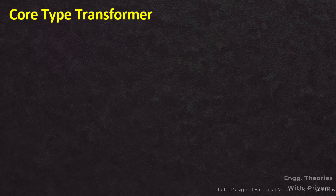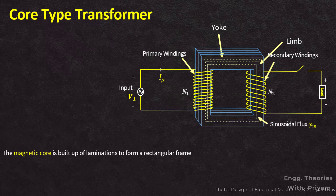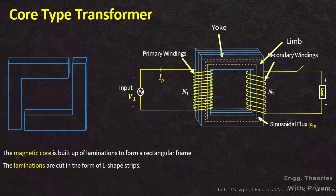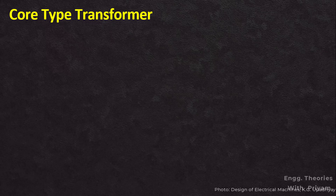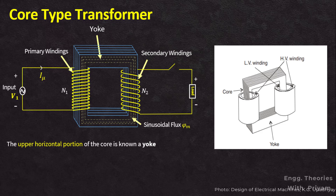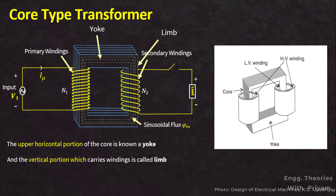In such transformers, the magnetic core is built of laminations to form a rectangular frame. The laminations are cut in the form of L-shaped strips. To eliminate the high reluctance at continuous joints, the laminations are placed alternately. The upper horizontal portion of the core is known as a yoke, and the vertical portion which carries the winding is called the limb.